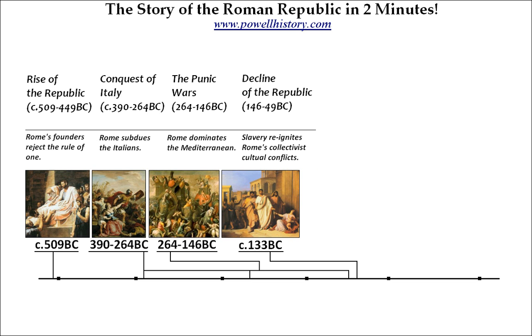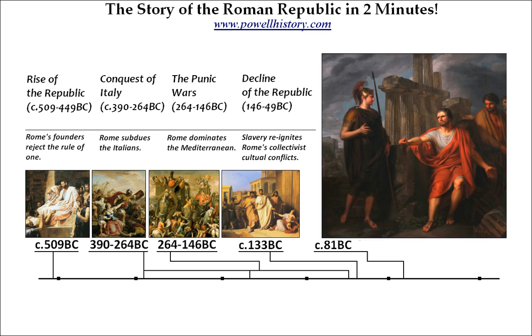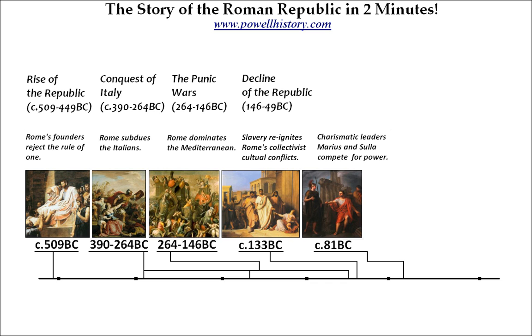Unable to properly define a commitment to individual rights, the Romans decided to try to regulate their affairs through the agency of charismatic leaders, Marius and Sulla, whose agendas inevitably clashed, leading to a temporary dictatorship by Sulla, circa 81 BC.